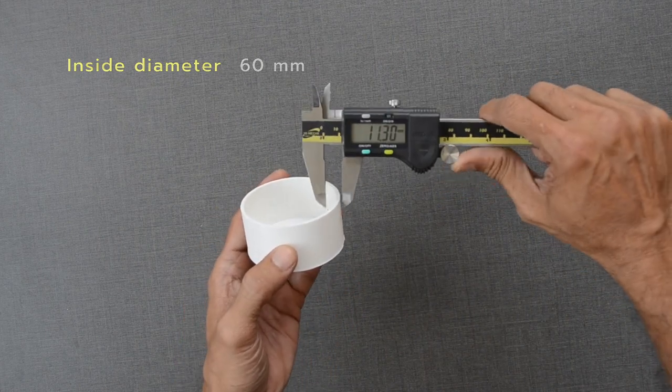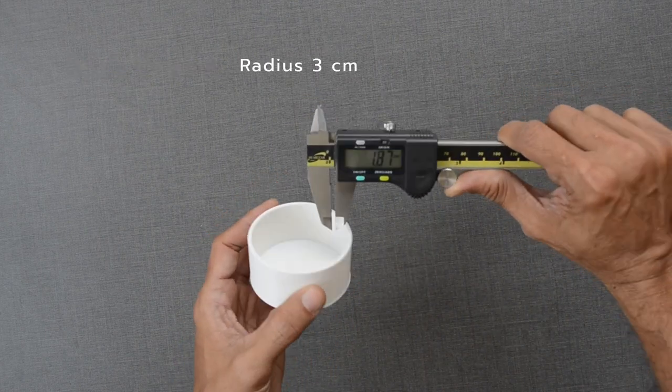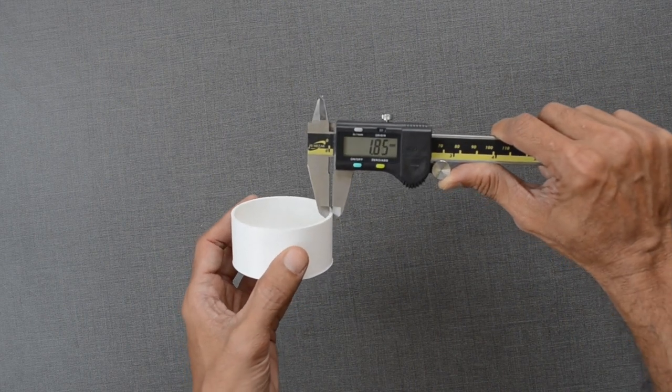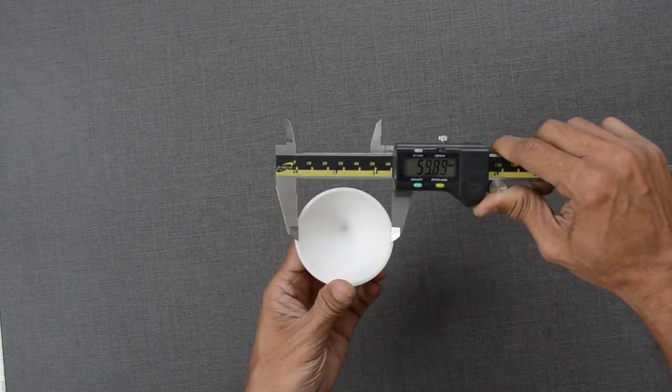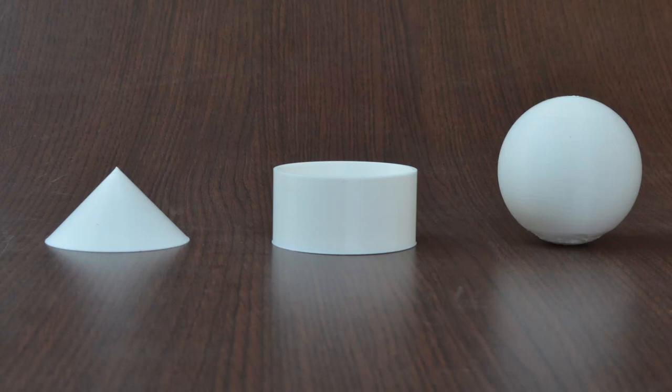Radius will be half of that, that is 30 mm or 3 cm. Height of this cone is 30 mm or 3 cm, as discussed earlier.